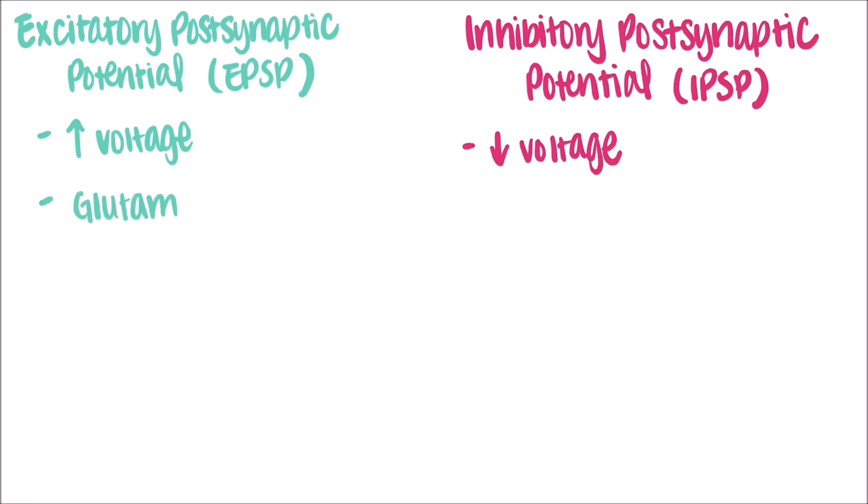Glutamate increases postsynaptic membrane permeability to both sodium and potassium ions, which makes membrane potential more positive.